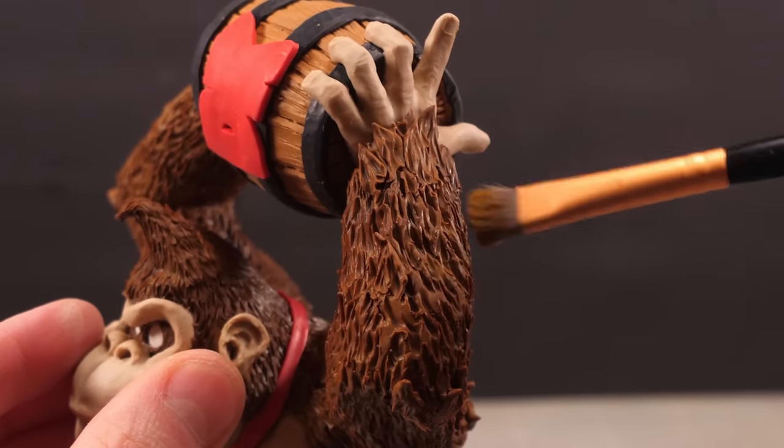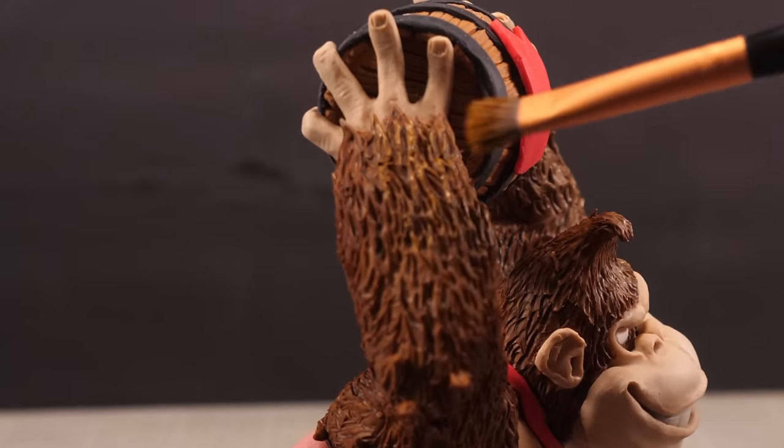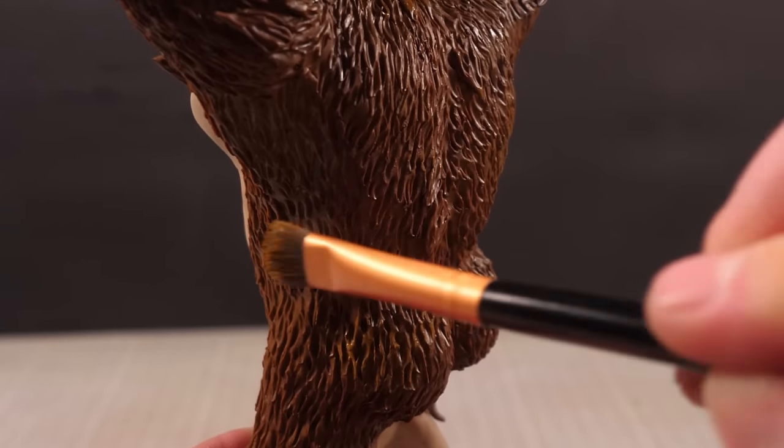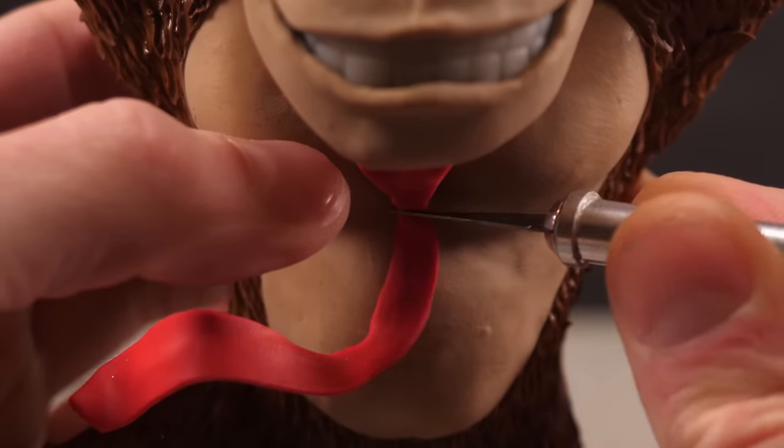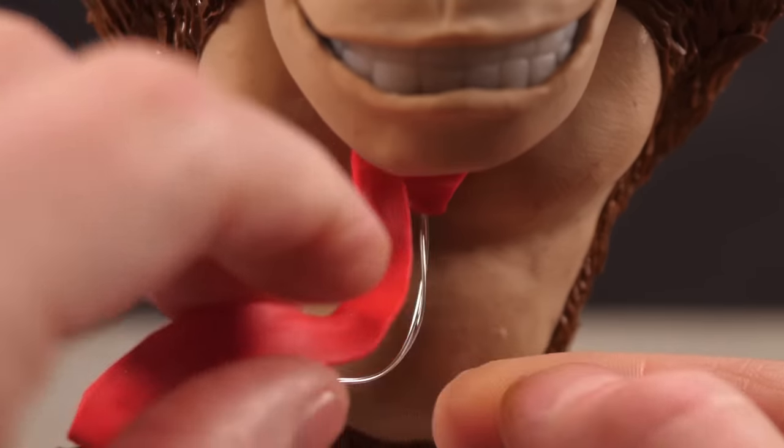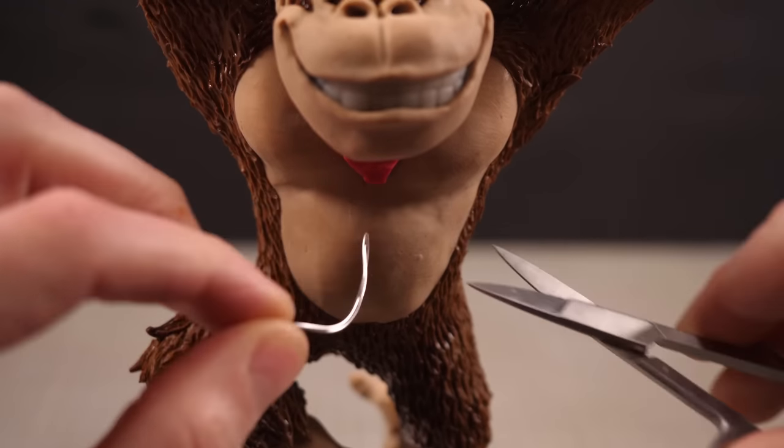And once that's had time to dry, I can give it a quick dry brushing with a little lighter brown to add some highlights to the tips before removing the tie so I can start to add a bit of variation to his fleshy chest and cheeks and hands.